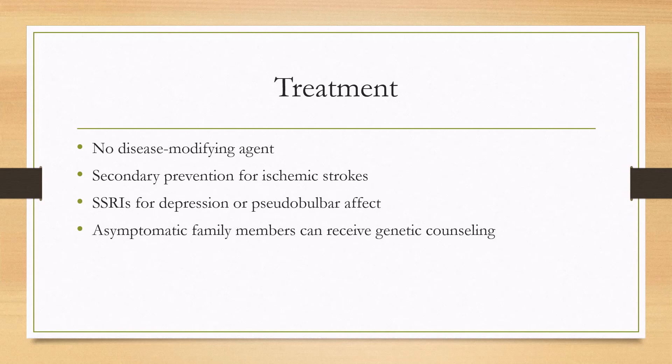In terms of treatment, there's no disease-modifying agent. However, strokes are treated with secondary prevention the same as for other ischemic strokes. Mood disorders and pseudobulbar affect can be treated with SSRIs. Asymptomatic family members of people with CADASIL can also receive genetic counseling when they're adults.